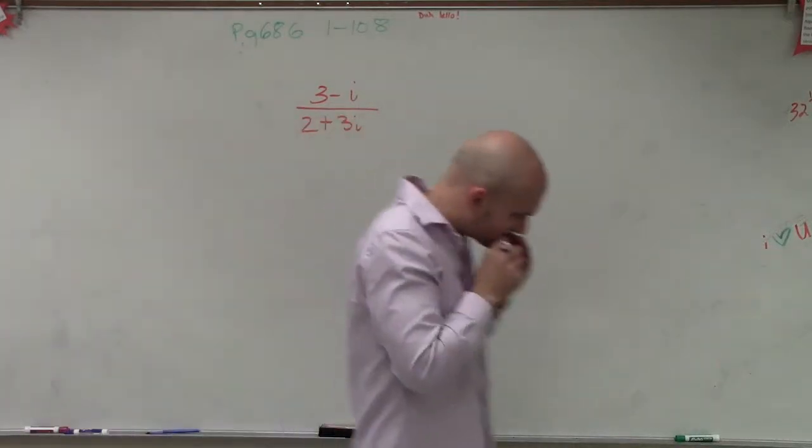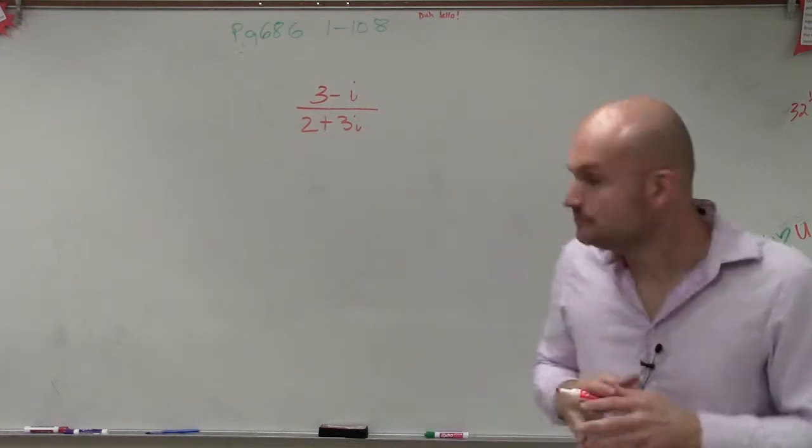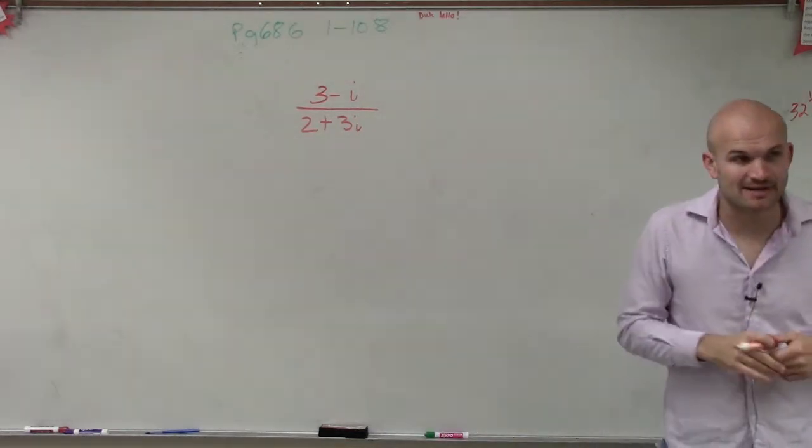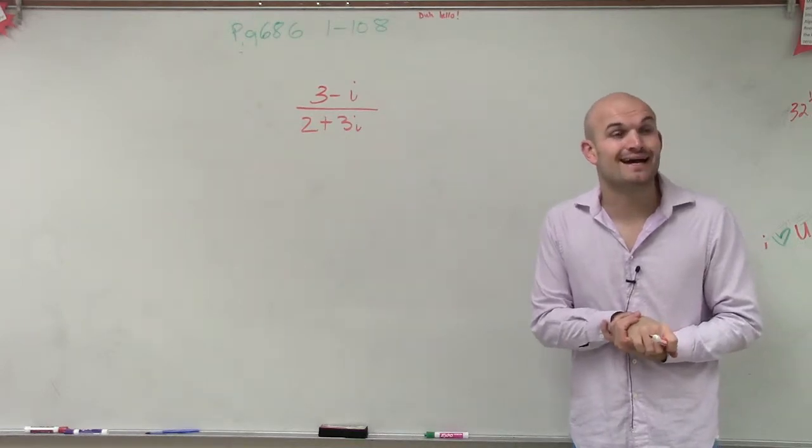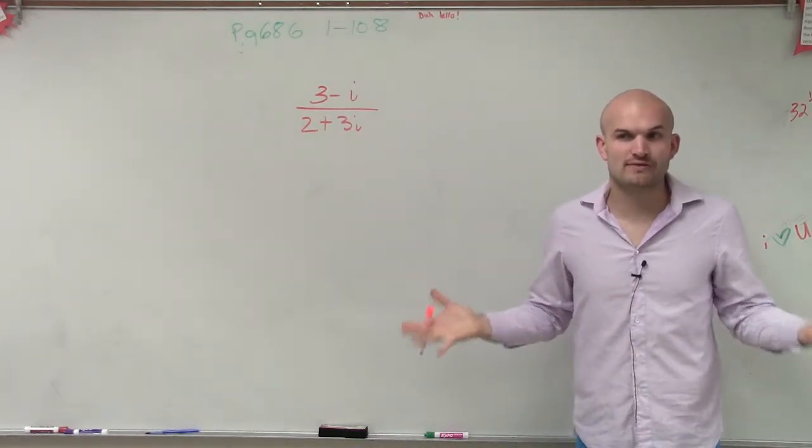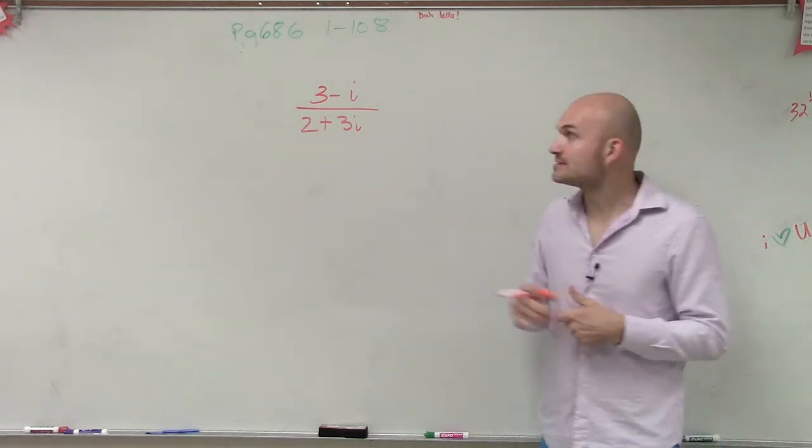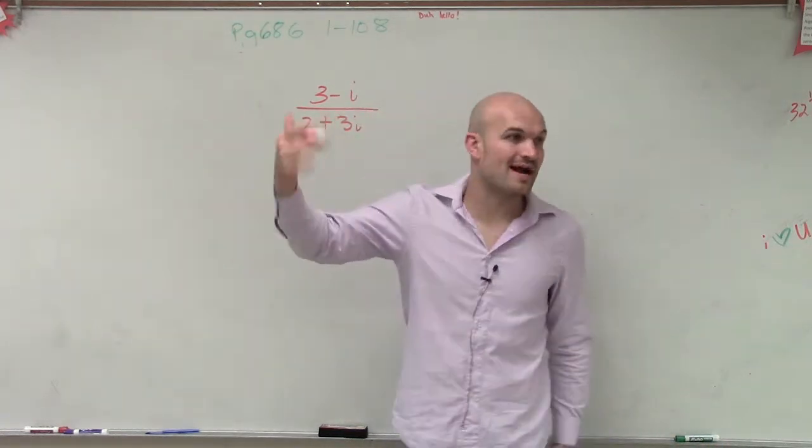OK, so when looking at this problem, I have 3 minus i divided by 2 plus 3i. The main important thing that we talked about is i, our imaginary number, is the same thing as the square root of a negative number. And if you remember, when we were simplifying radical expressions,